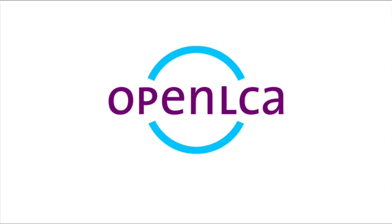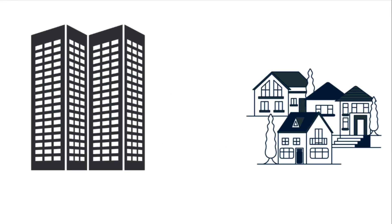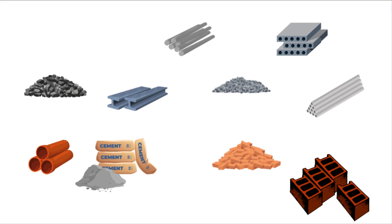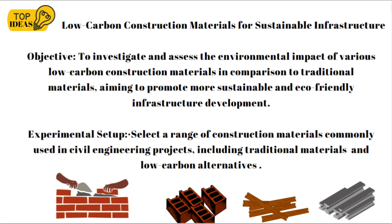Moving on to the first project: when we design high-rise buildings or homes, we have been using energy-intensive materials such as cement, glass, steel, aluminium, and concrete blocks. By incorporating innovative materials like recycled steel, engineered wood, and sustainable concrete mixes, we can significantly reduce the carbon footprint of our structures. The first project is Low Carbon Construction Materials for Sustainable Infrastructure. The objective is to investigate and assess the environmental impact of various low-carbon construction materials in comparison to traditional materials, aiming to promote more sustainable and eco-friendly infrastructure development.